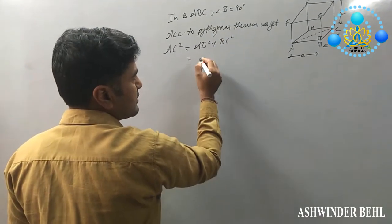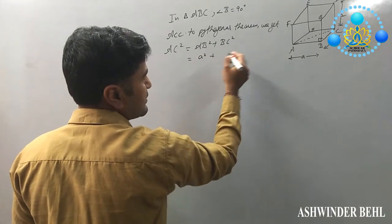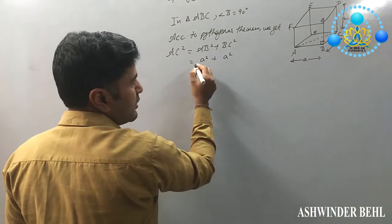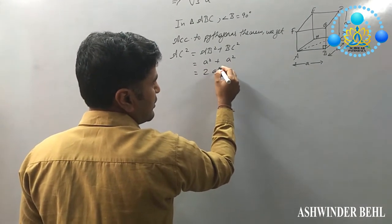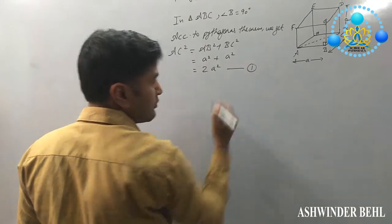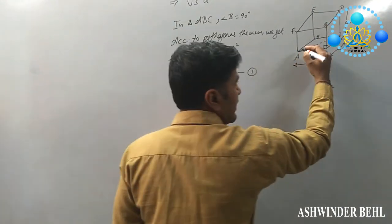So AB square is A square and BC is A square. So A square plus A square is 2A square. Now we can put here, that is first equation. Now we will join AD.